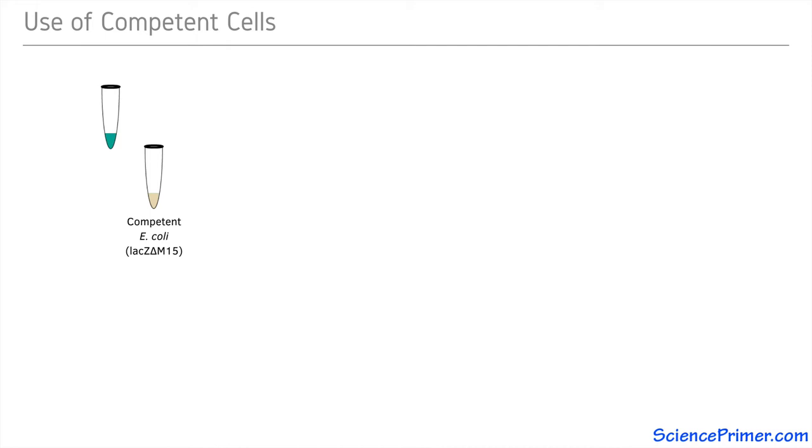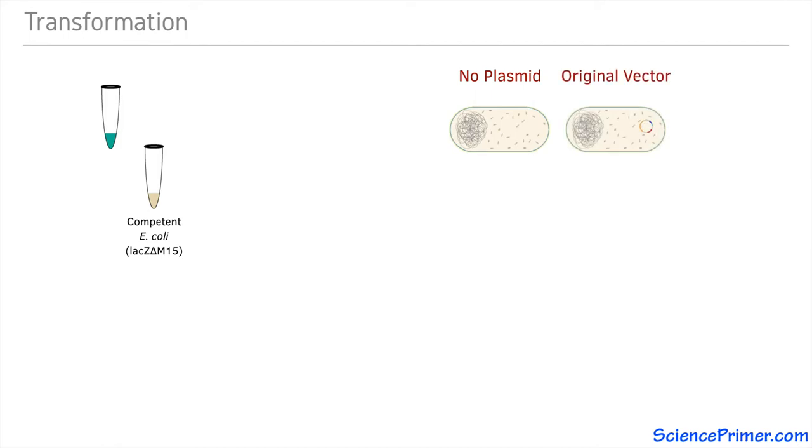After the transformation, the tubes of competent cells will contain a mixture, including some cells that do not contain a plasmid because they did not take up any DNA, cells that have taken up the original vector, and others that have the desired vector with the target fragment inserted into the polylinker region.